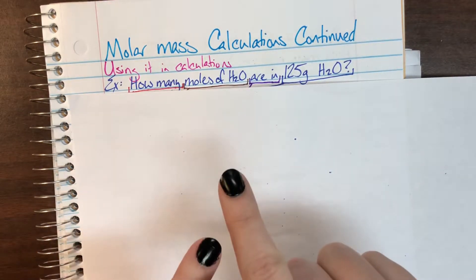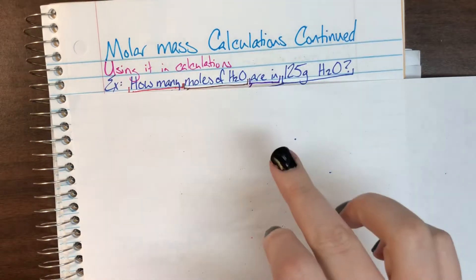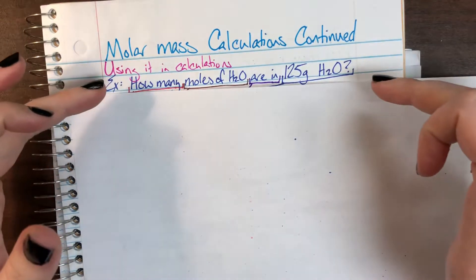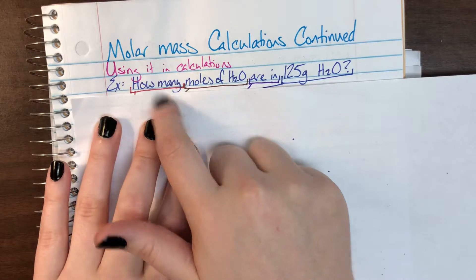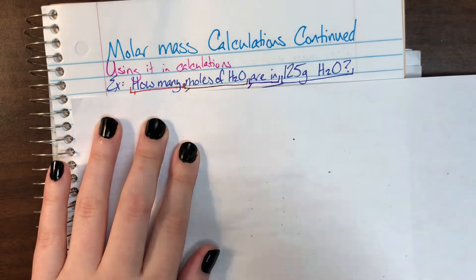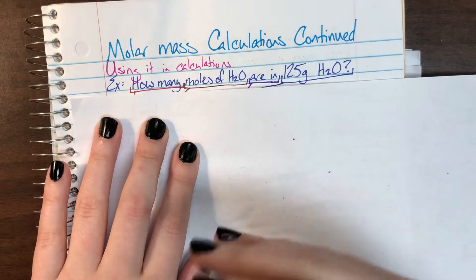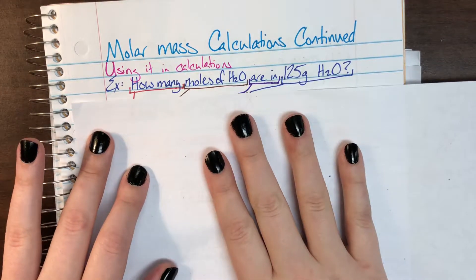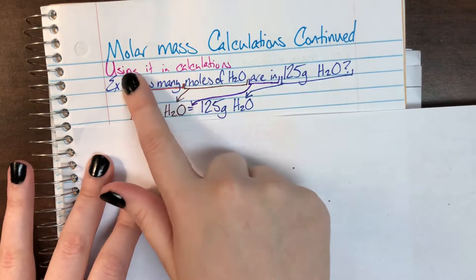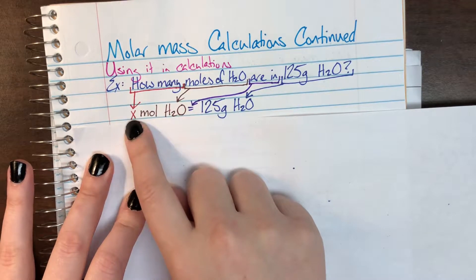So we're going to translate this English into math. How many? Well, that's a question. And in math, when we are trying to solve for something, when we're trying to find a value, we generally look for X. So that how many, that question word, turns into X.